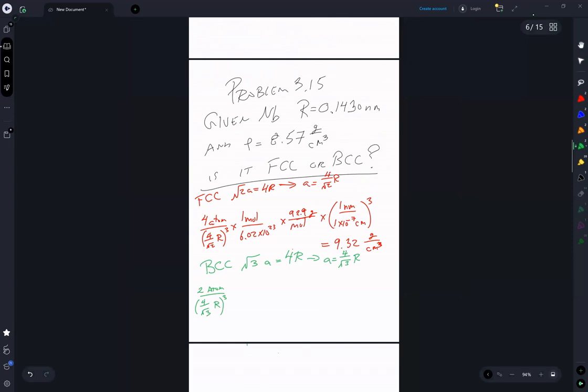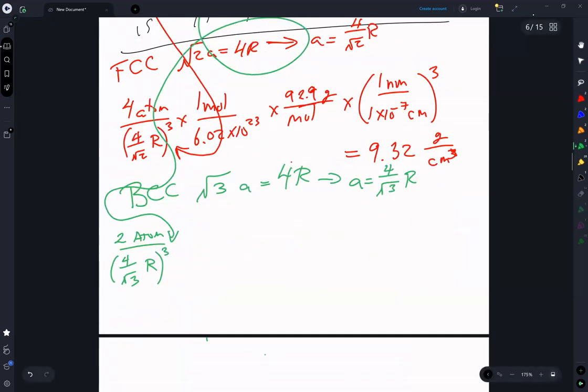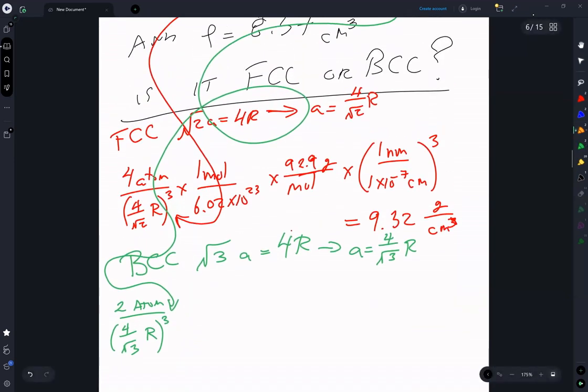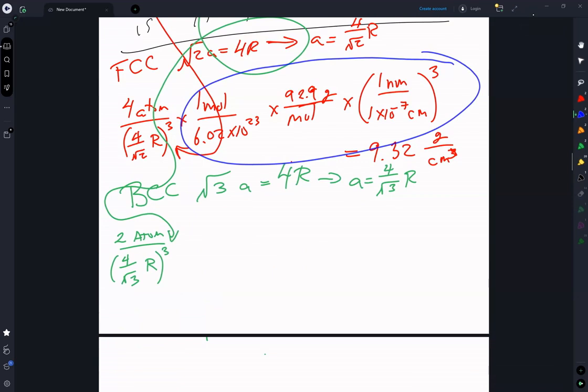You're given the radius r to put in there, and you do the same thing here. I computed that quantity, and that quantity is 1.54 times 10 to the minus 10, which results in 8.57 gram per centimeter cubed.